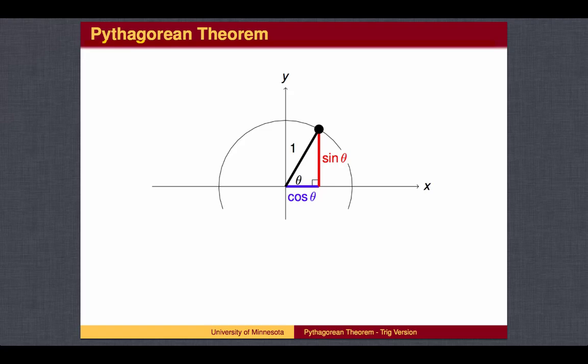Cosine of theta is the x-coordinate of the black dot, but it is also the length of the bottom side of the triangle. The sine of theta is the y-coordinate of the black dot, but it is also the length of the leg opposite the angle theta.